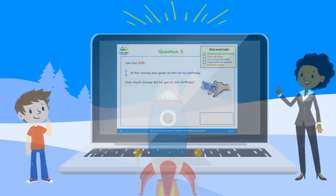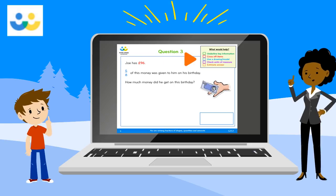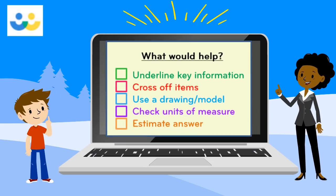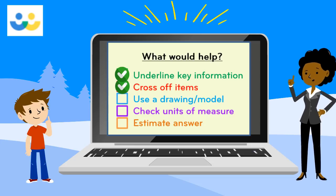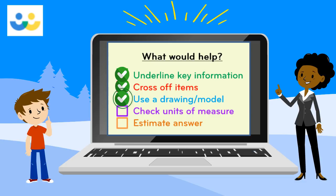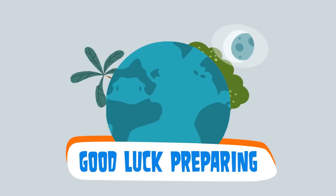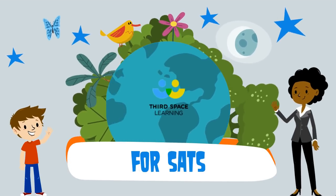We end in the Third Space Learning world. In your lessons, you will notice a yellow 'What Would Help' box in the corner. These remind you of the tips we learned today: identify your keywords, cross off items, use a drawing to help understand the problem, check units of measurement, and estimate your answer to check if you're on the right track. We hope you found this helpful — good luck preparing for SATs! Bye!